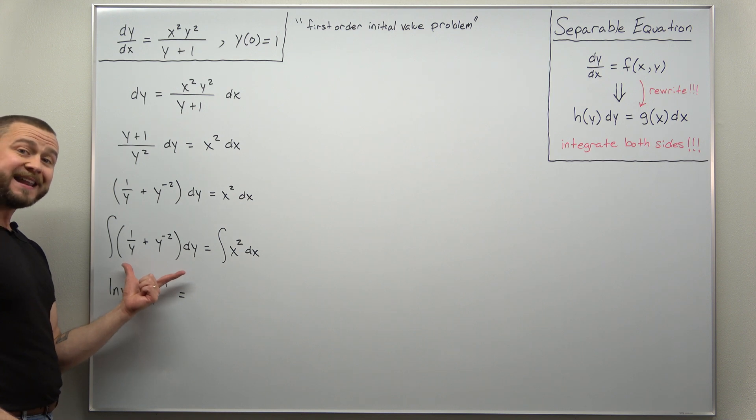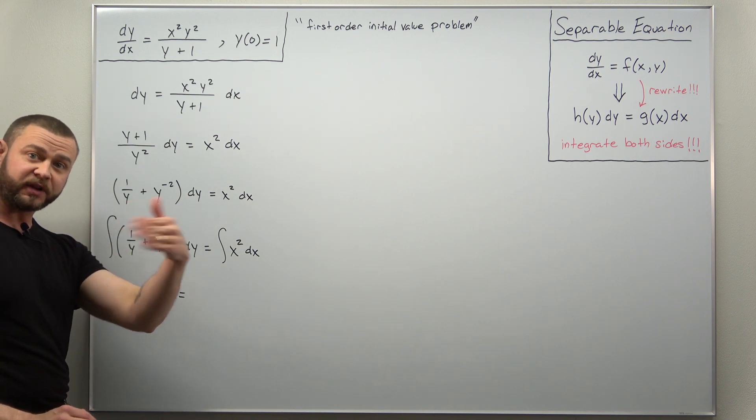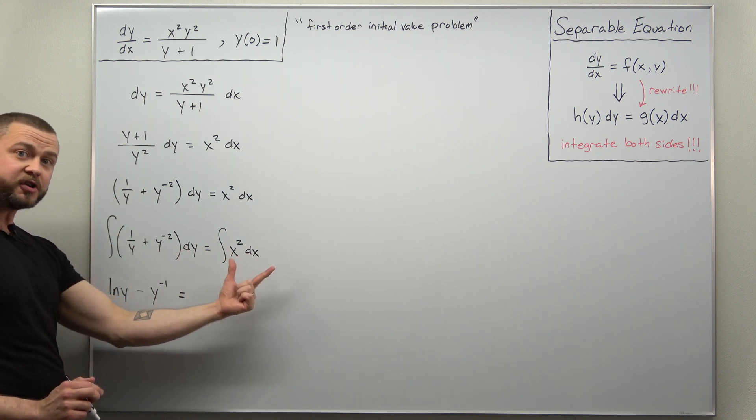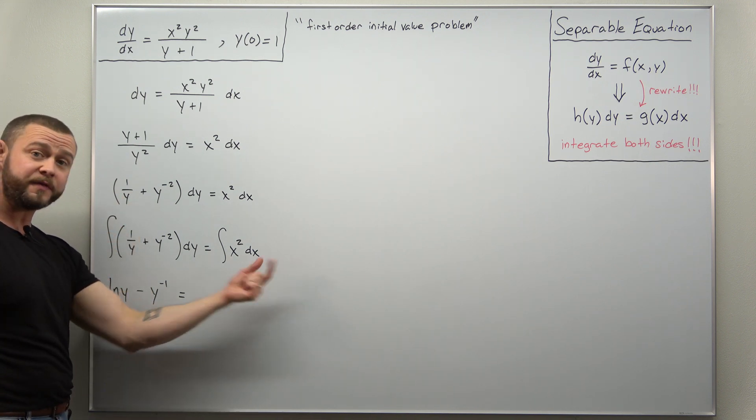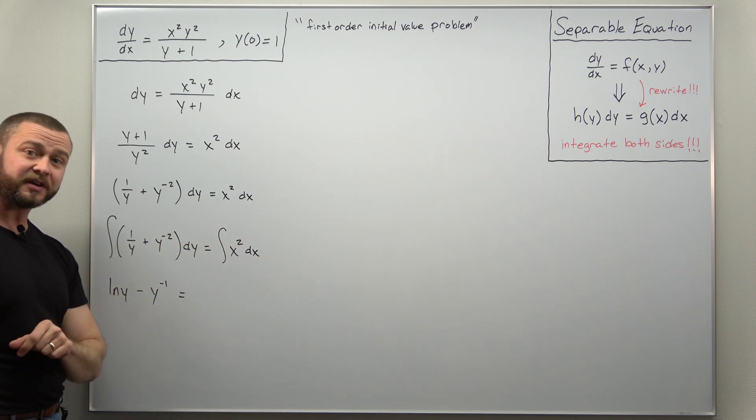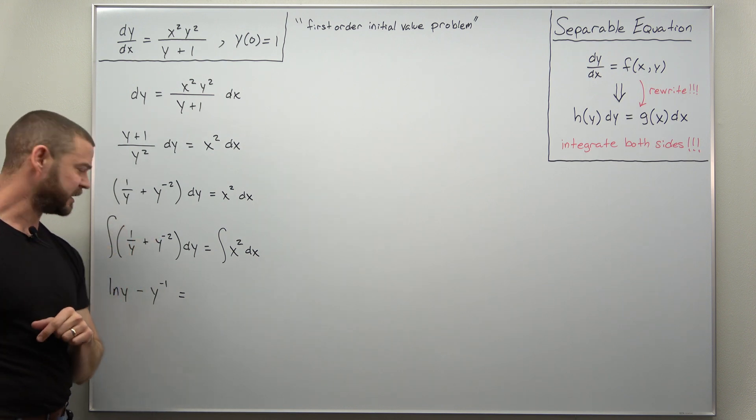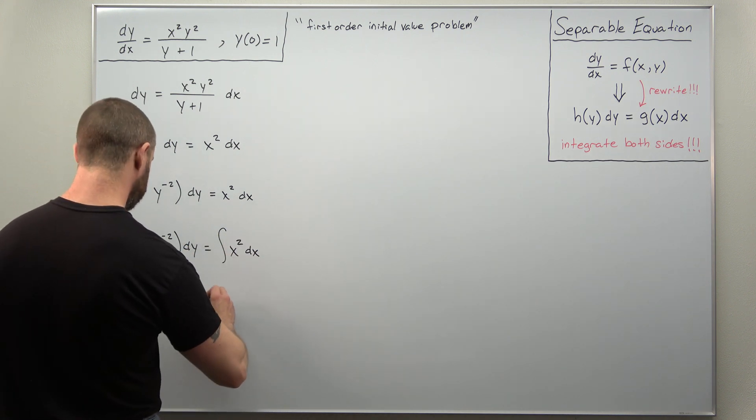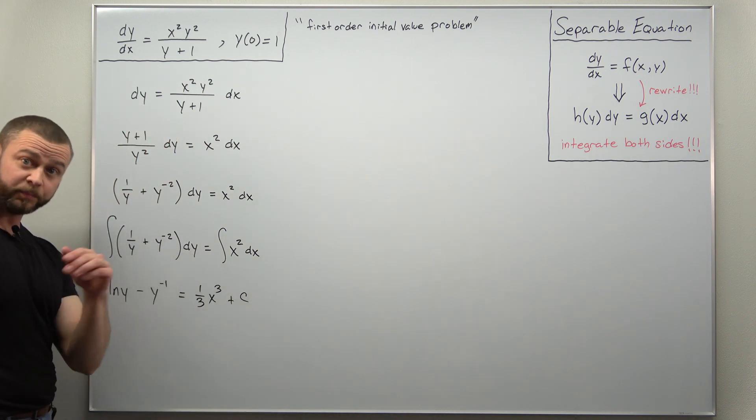And it's worth pointing out because we're finding an antiderivative here. Usually we would include a plus c, but we only need to include one constant of integration on one of the sides. I always like to include the constant of integration on the x side. And the reason for that, if you have a constant on this side, a constant on that side, you can subtract a constant minus a constant is another constant. So let's include our plus c when we integrate with respect to x, which would give us one third x cubed plus c.